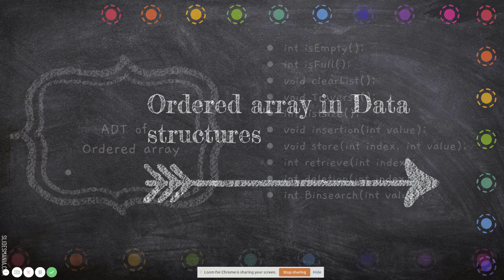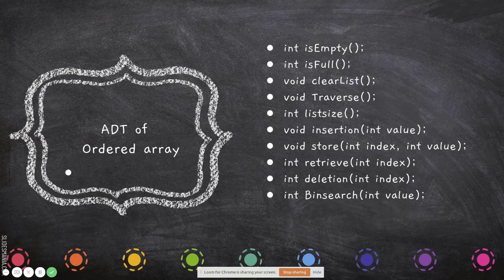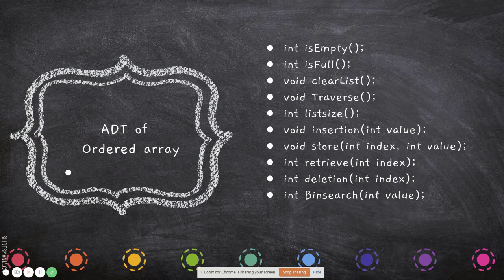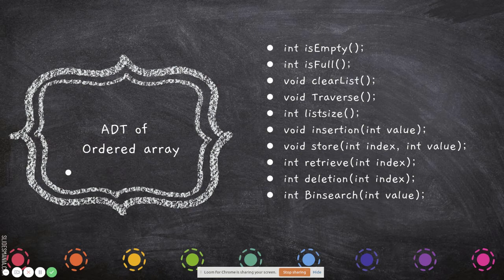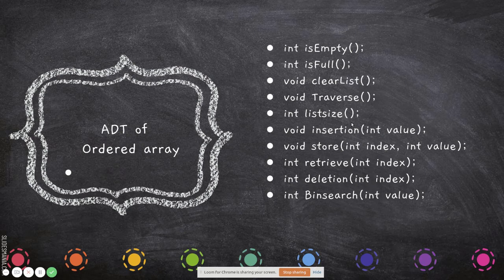These are the ADT operations of an ordered array. 'isEmpty' is used to check whether the data is present in the array before you remove it — if the data is not there you cannot remove it. 'isFull' checks if the array has reached its maximum size, so you cannot add more. 'clear' clears the list. 'traverse' is used to print all the values in the array.